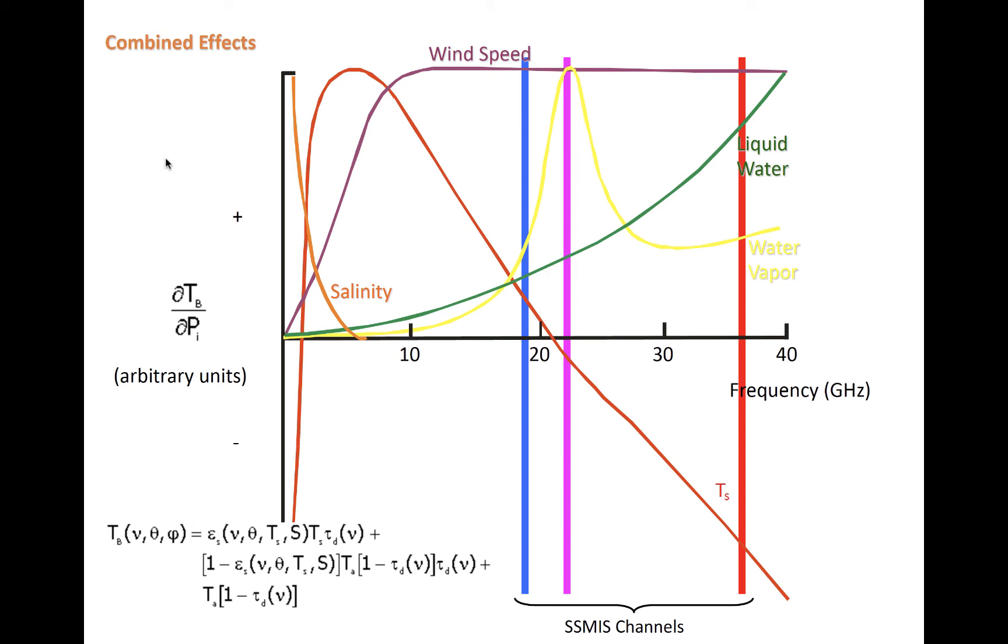Finally, this rather complicated plot shows the effects of various surface or atmospheric properties on brightness temperature at three SSMIS channels, 19 in blue, 22 in magenta, and 37 in red GHz. The x-axis on this plot is frequency, and the y-axis represents the change in brightness temperature, this delta Tb, that occurs as a result of a change in one of the properties plotted, and that's just what the delta P is. It could be any of these things listed on the slide. The plus and minus signs represent the sign of this change in the brightness temperature that corresponds with a positive change in any of the variables plotted.